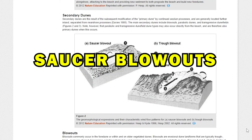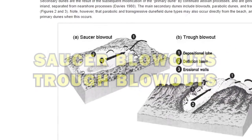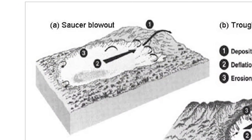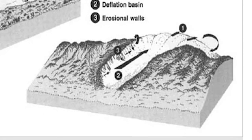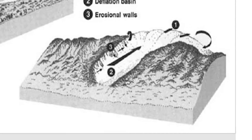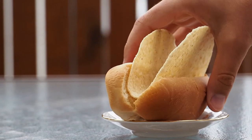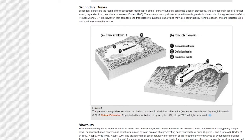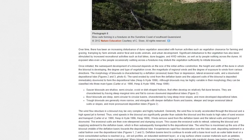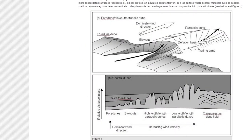Saucer blowouts and trough blowouts. Saucer blowouts are typically formed on shallow slopes. Like the name implies, they're shaped like saucers. On steep slopes, you can find trough blowouts, which are shaped more like a taco or a hot dog bun. Wow, that looks really weird. What were we talking about? Oh yeah, blowouts. They often form into parabolic dunes.